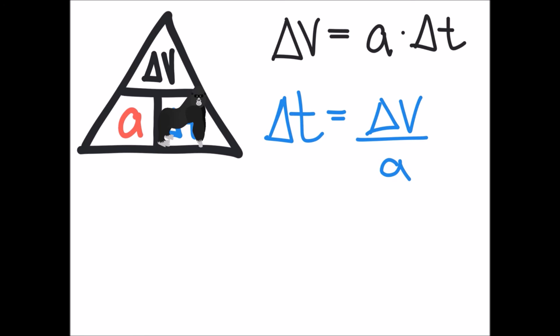And the last variable we're going to look for is acceleration. Let's place the gorilla over the variable we're looking for so we can rewrite a equals delta v over delta t.